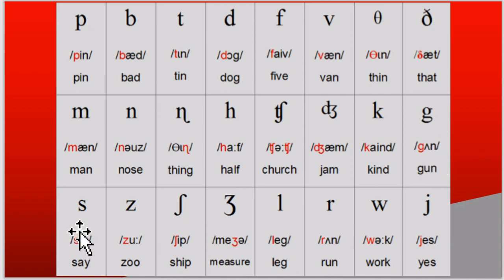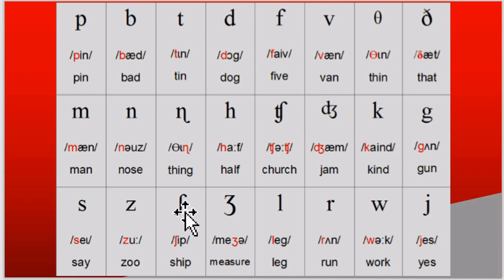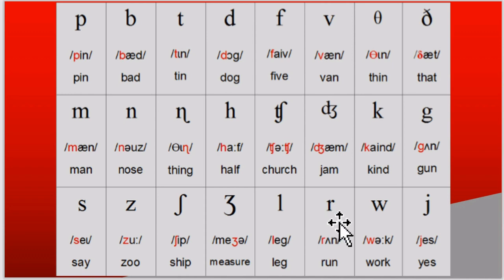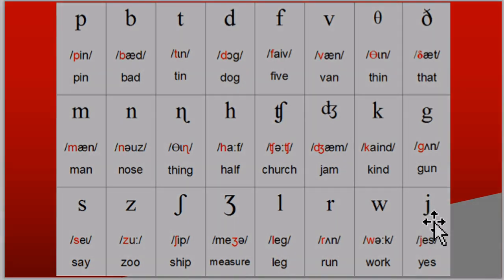H as in hat, ch as in church, J as in jam, K as in kind, G as in gun, S as in say, Z as in zoo, sh as in ship, the zh sound as in measure, L as in leg, R as in run, and the two semi-vowels W and Y as in work and yes.